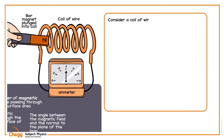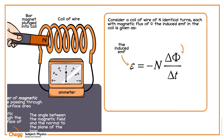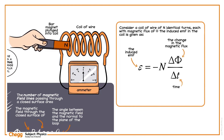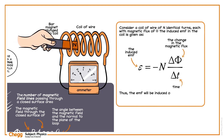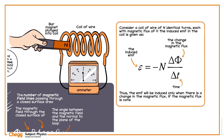Consider a coil of wire of N identical turns, each with magnetic flux. The induced EMF in the coil is given by the formula, where the induced EMF equals the change in the magnetic flux over time. Thus the EMF will be induced only when there is a change in the magnetic flux. If the magnetic flux is constant, then there will be no induced EMF.